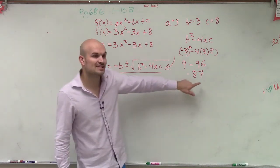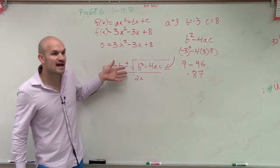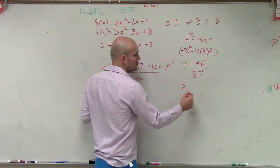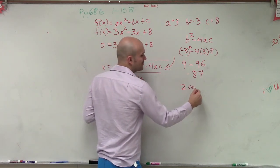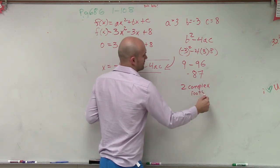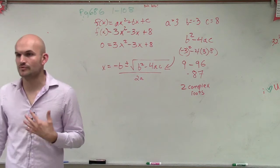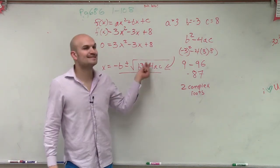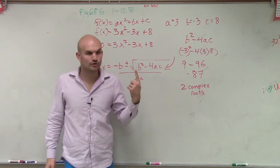Now remember, when we take the square root, you're going to have plus or minus. So for this answer, you're going to have two complex roots. You're always going to have two complex roots, unless this number is 0, then you'd only have one root.